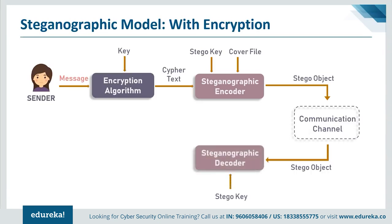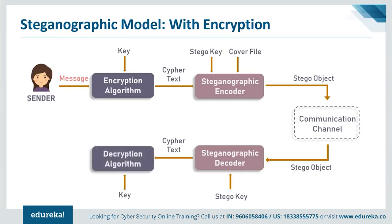On the receiver's end, they feed the stego object along with the stego key into the steganography decoder, getting a ciphertext. To decrypt the data, they feed the ciphertext and decryption key into a decryption algorithm, resulting in the secret message. So if you want to make it more secure, you can include encryption as well. Any steganography method works this way — it's just the algorithm used to embed data into the cover object that differs.